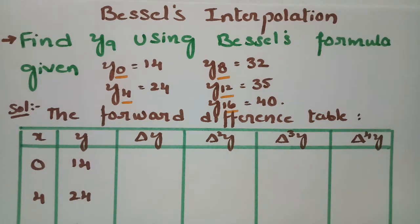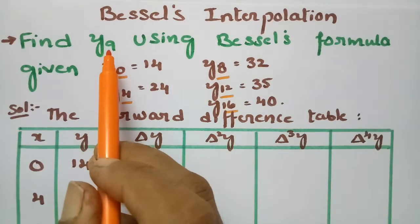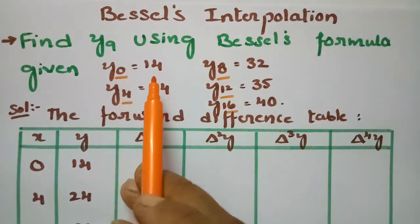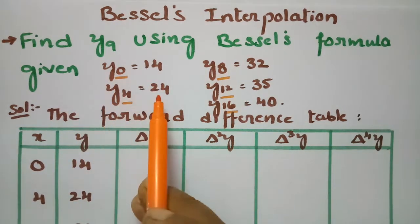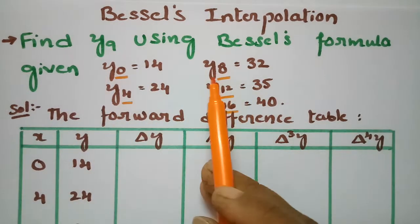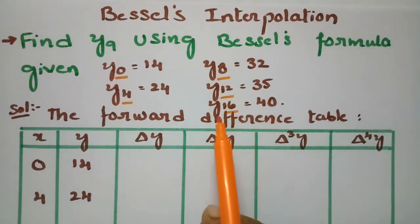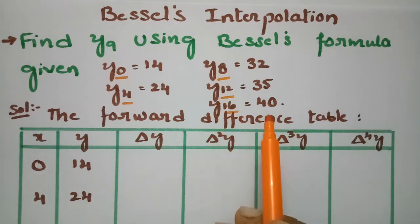In today's video I am going to use Bessel's interpolation formula for finding y at 9. The given values are: y₀ = 14, y₄ = 24, y₈ = 32, y₁₂ = 35, and y₁₆ = 40.